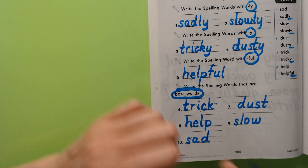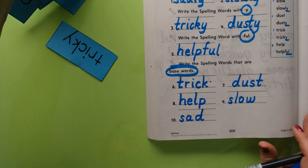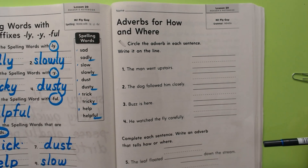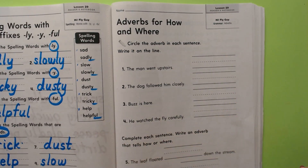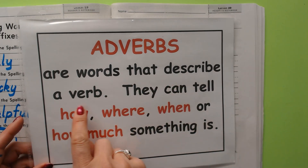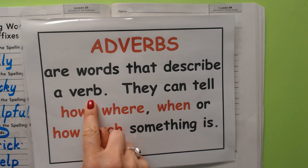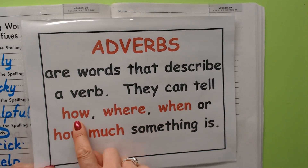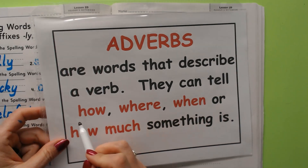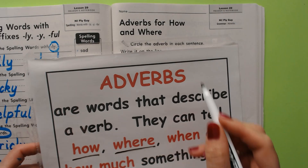We're done with our spelling — that was page 200. Let's go to page 201. We're talking about adverbs — adverbs for how and where. We've talked about adjectives and how they describe nouns. Well, adverbs are words that describe a verb — an action word. They can tell how, where, when, or how much.